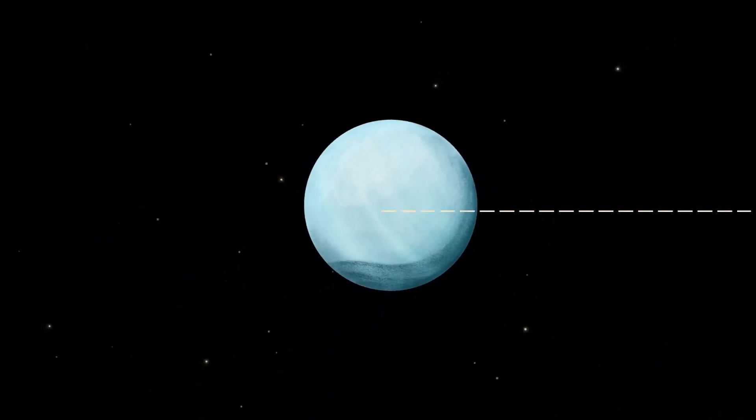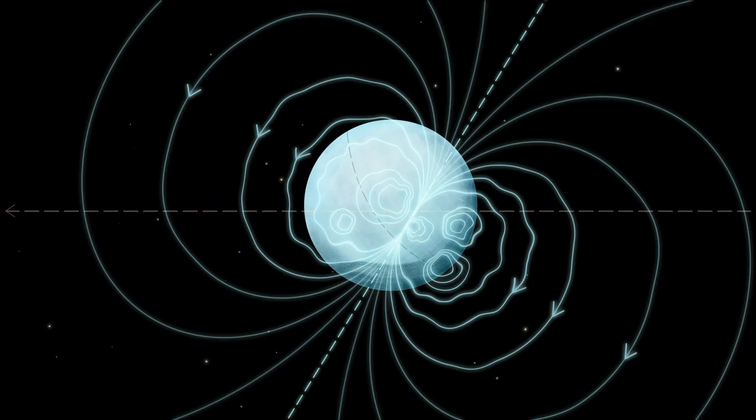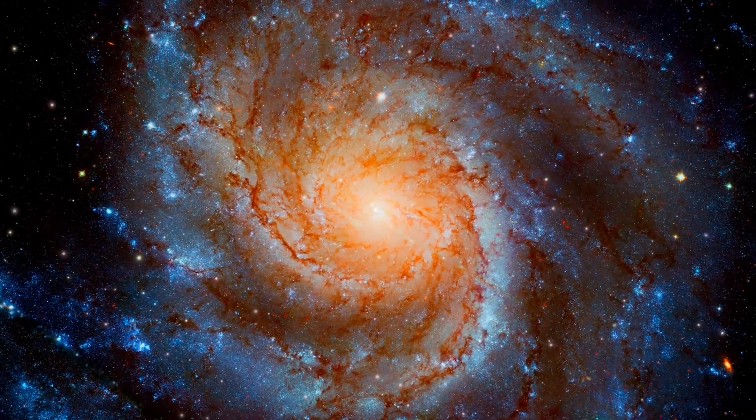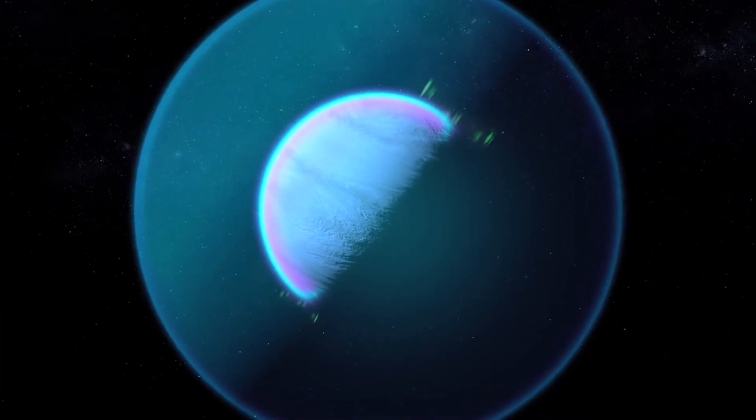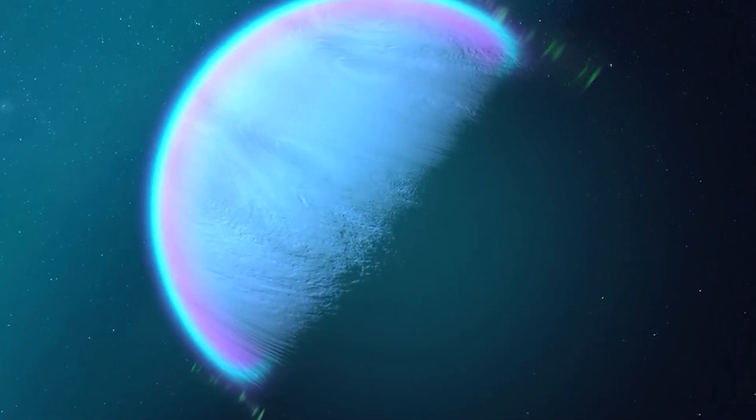Beyond its moons and rings, Neptune possesses a powerful magnetosphere dominated by its magnetic field. This interaction with the solar wind gives rise to stunning auroras that illuminate the upper atmosphere with vibrant colors, creating a mesmerizing display.